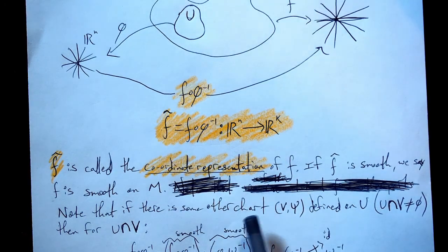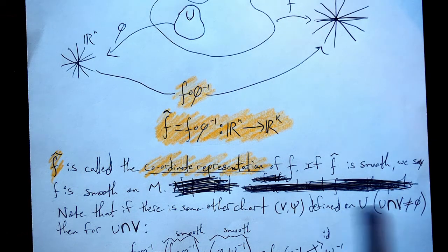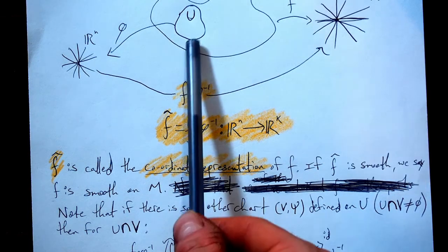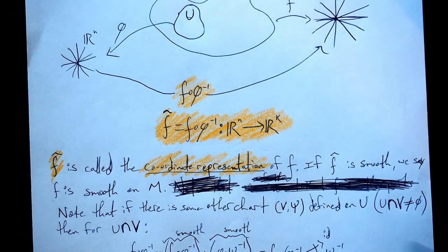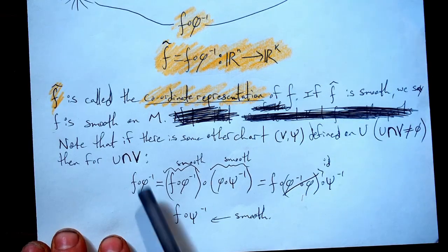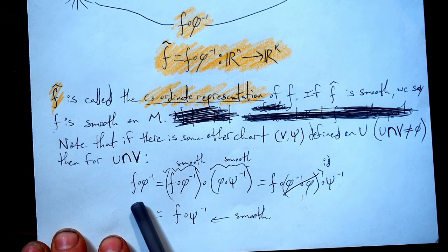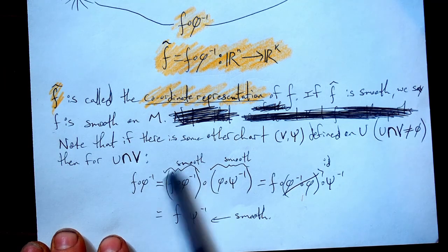So note that if there's some other chart, right, it has an open set. Here's our map off the manifold down into ℝ^n. And it's defined on U. Just looking at this open set here, it might overlap. It might have a non-empty intersection with some other open set. Here we call it V. So let's assume that this guy is smooth. Let's assume that we have showed that f composed of φ^(-1) is smooth right here.